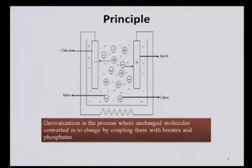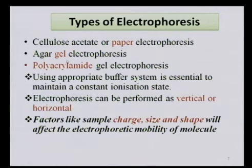For molecules without charge, there is a process called derivatization — that means giving charge to uncharged molecules. For example, carbohydrates can be derivatized to be given charge. For this purpose of derivatization we use either borates or phosphates, which give charge to uncharged carbohydrates.